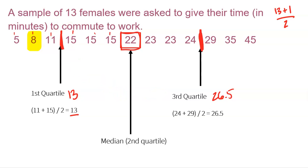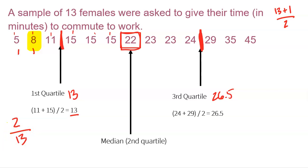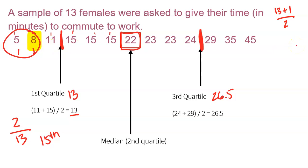Let's say I'm the girl that drove 8 minutes — what is my percentile? Now we've got to do a little math. Count how many values are at 8 or below. There are two values at my value of 8 minutes or lower, and I divide by 13. So 2 divided by 13 is my percentile. With percentiles, we typically round to a whole number — 2/13 gives approximately the 15th percentile. So about 15% of values are at 8 or below, which means 85% of values would be more than that.